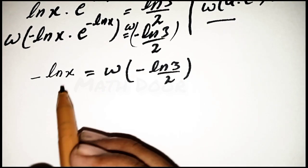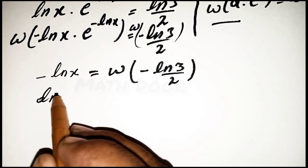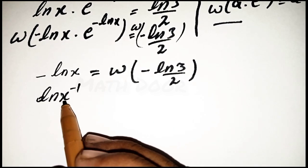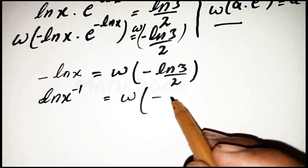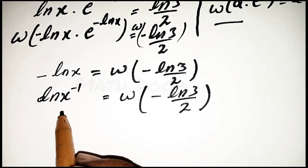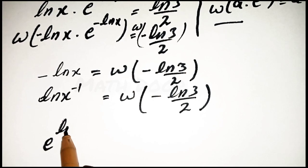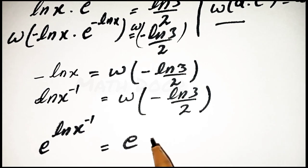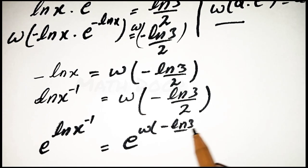We apply the minus into the power of x: we write ln(x^(−1)) = W[−ln(3)/2]. Then we write this as e^(ln(x^(−1))) on the left side, and the right-hand side becomes e^(W[−ln(3)/2]).